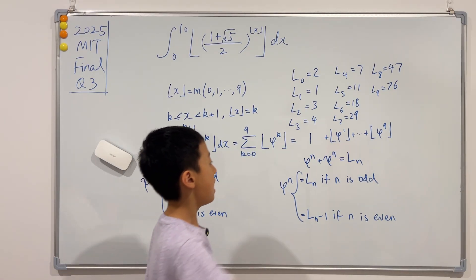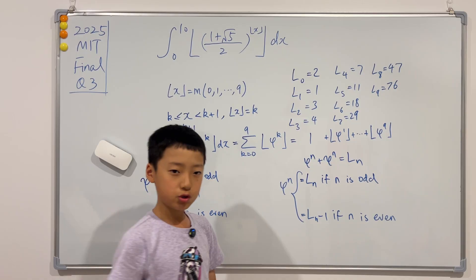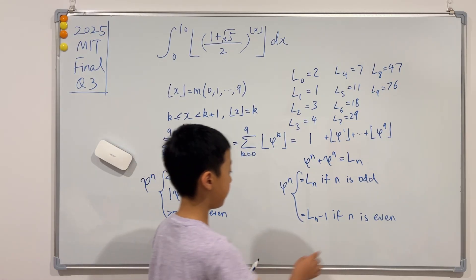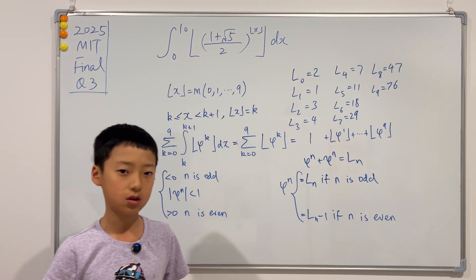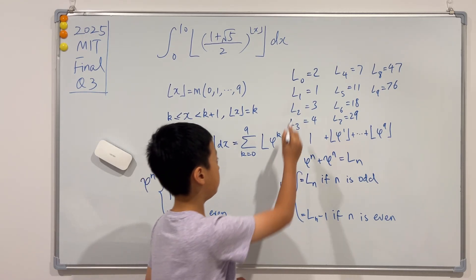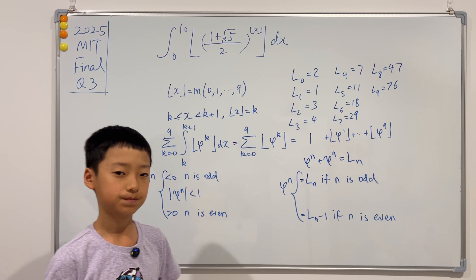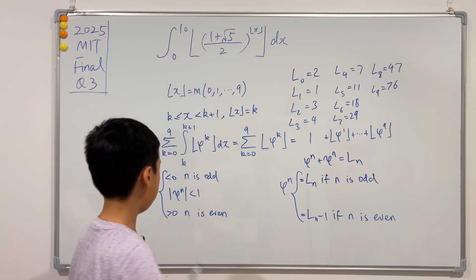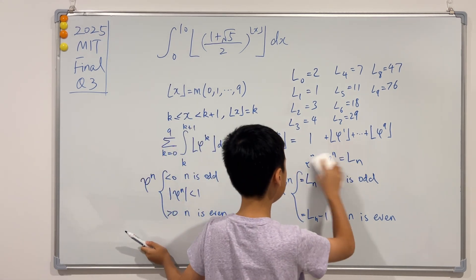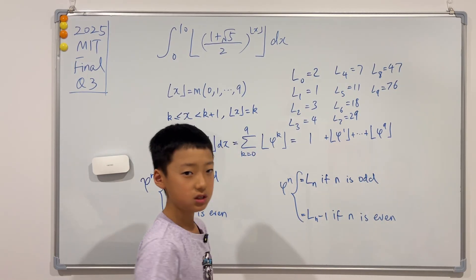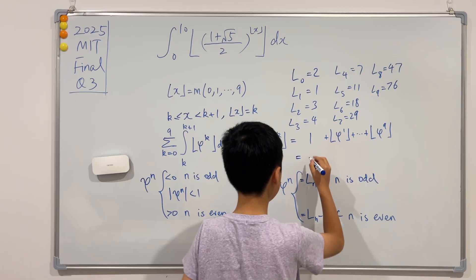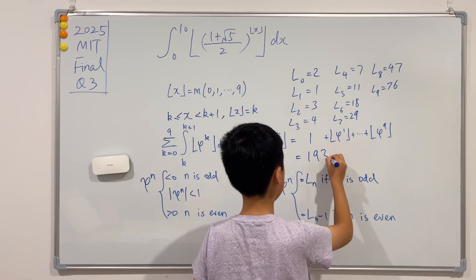But just be wary that if n is an even number, so for example phi to the second power, you have to calculate L of 2 but subtract 1. So if you did everything correctly, then you see that this summation will just evaluate to 193.